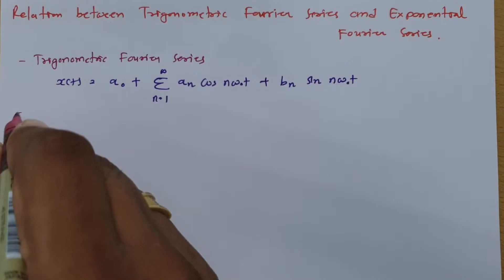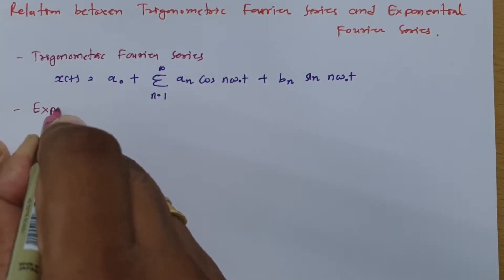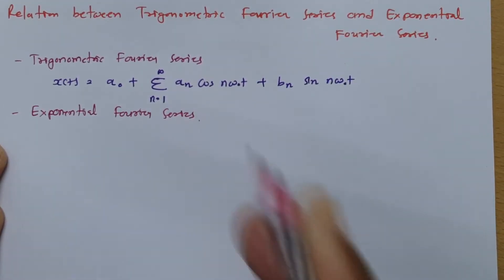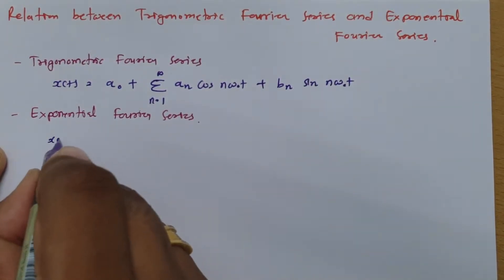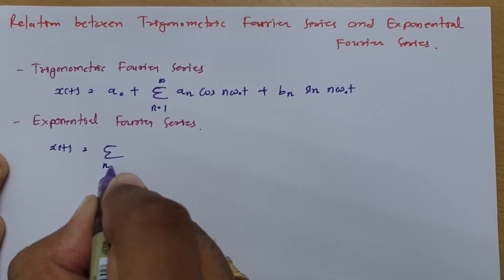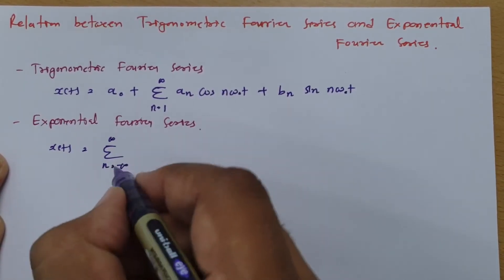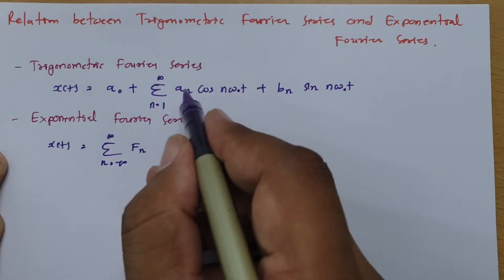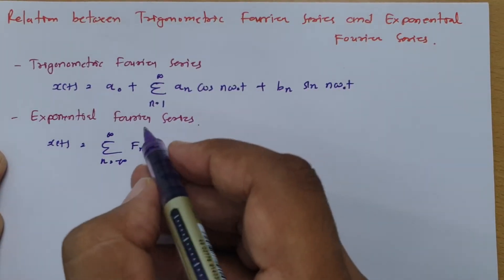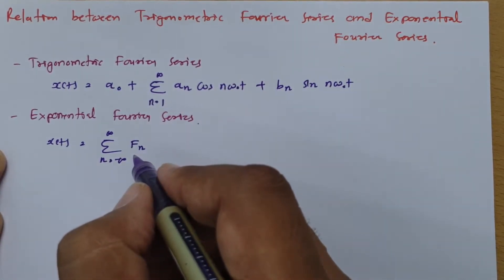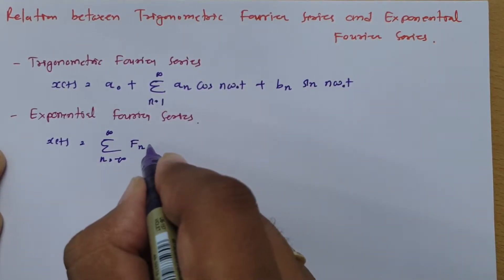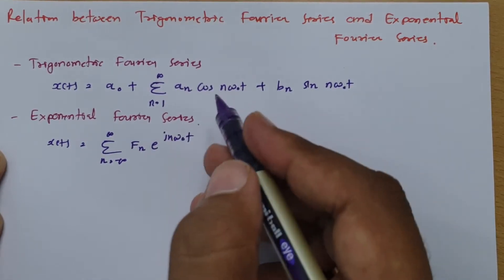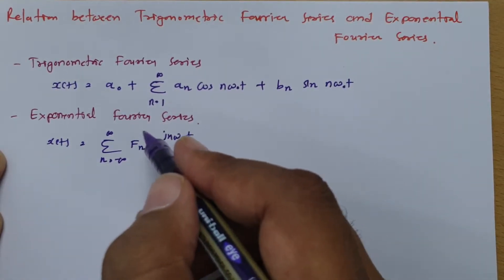We have already seen exponential Fourier series. That is: x(t) = summation from n = minus infinity to infinity of fn·e^(j·n·omega_0·t). I am writing fn here because we want to derive the relation between fn with an and bn. If I write an, the notation will be the same, so to differentiate the notation, I am using fn.